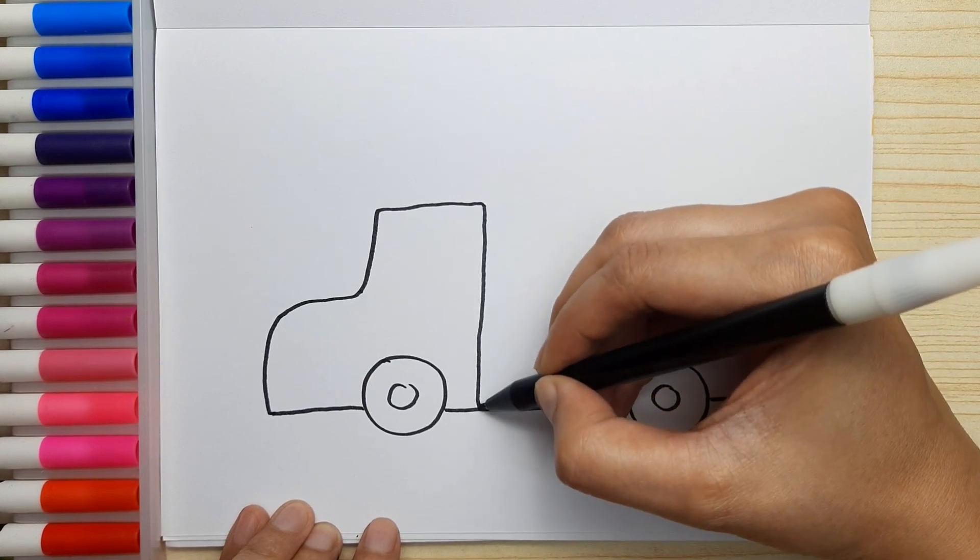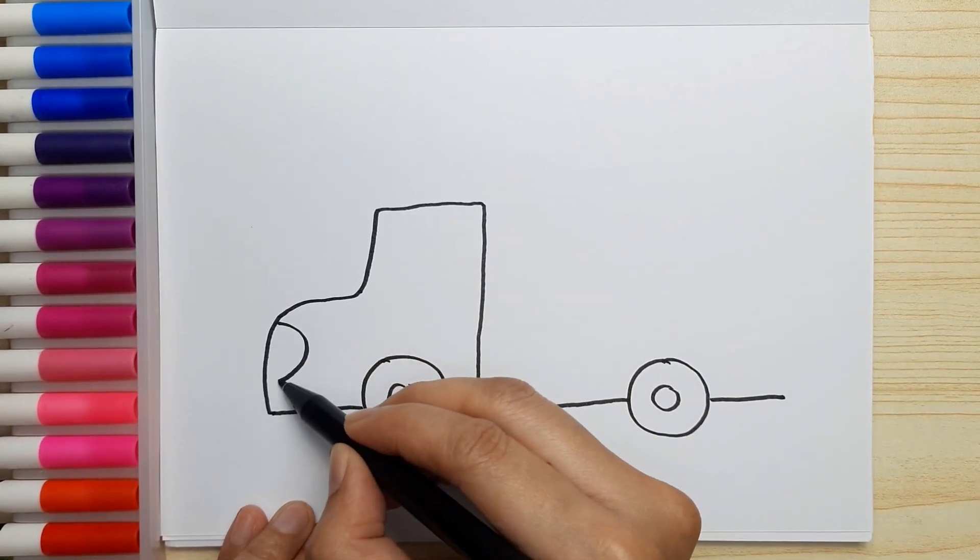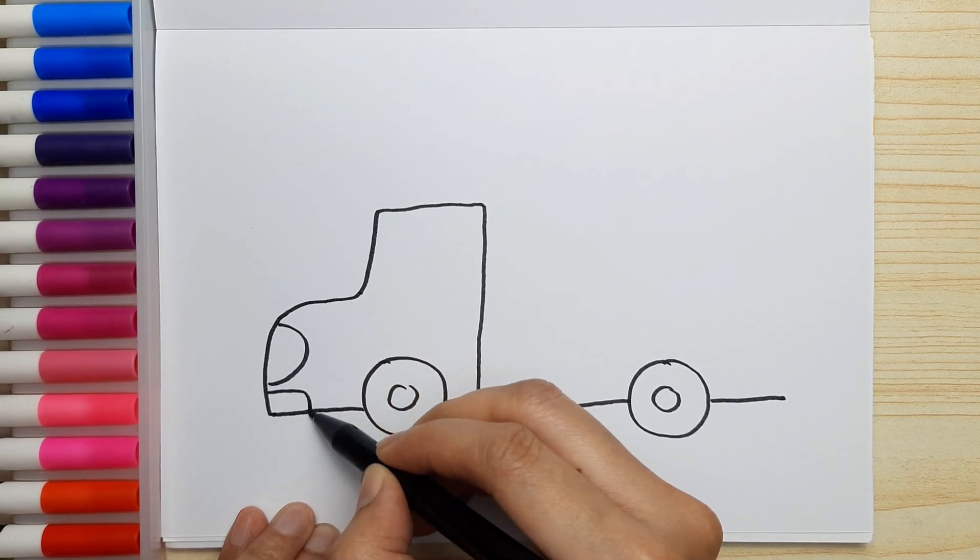Now, let's finish the detail of the cab. Draw the light, the side mirror and the window.